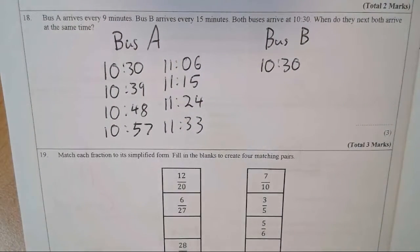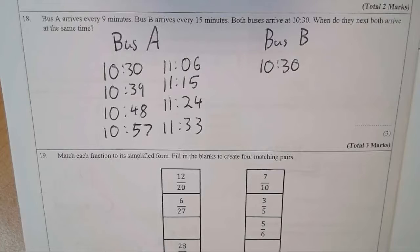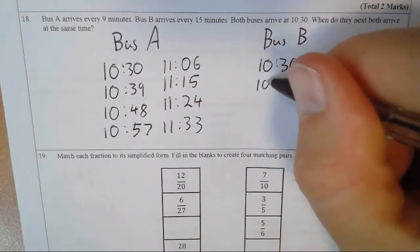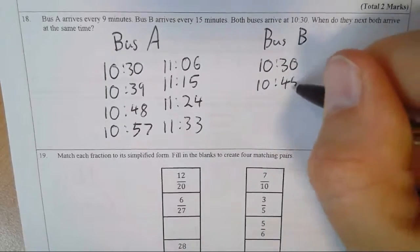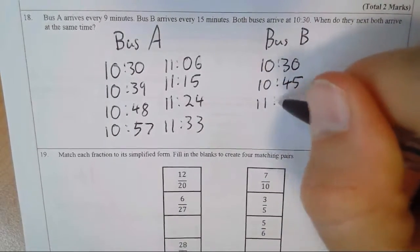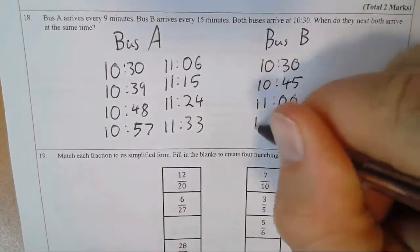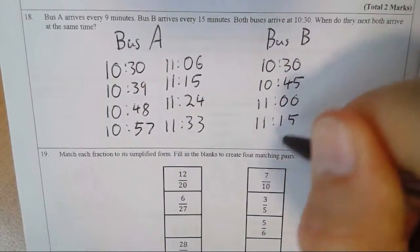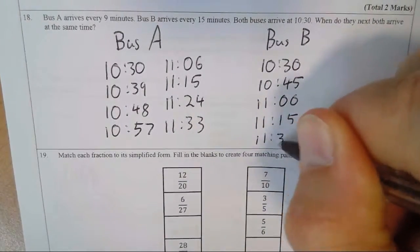Now, let's think about Bus B. Bus B arrives at 10:30, and then it arrives every 15 minutes. So 10:30, 15 minutes later is 10:45. 15 minutes after that is 11:00. 15 minutes after that is 11:15. 15 minutes after that, 11:30.